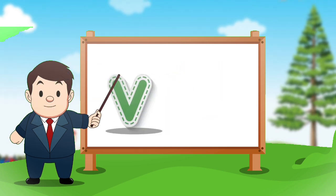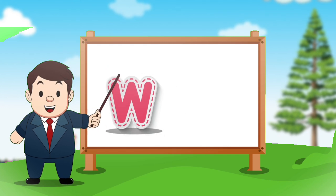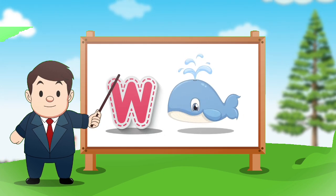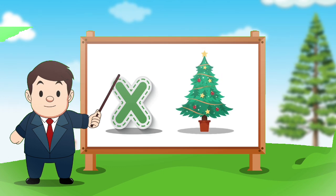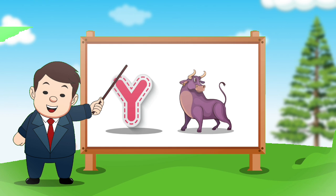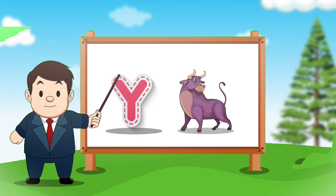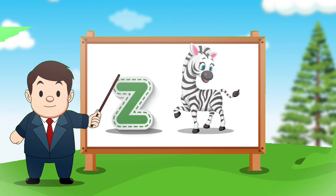V. V for van. W. W for whale. X. X for xmas. Y. Y for york. Z. Z for zebra.